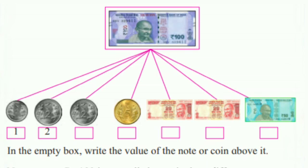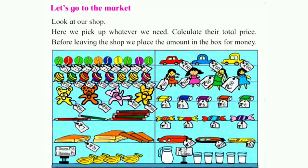Children, as you can see, Nandu Kaka has given Rama the change for 100 rupees. Let us now see the smaller denominations: a 1 rupee coin, a 2 rupees coin, another 2 rupees coin, a 5 rupees coin, a 20 rupees note, another 20 rupees note, and a 50 rupees note.